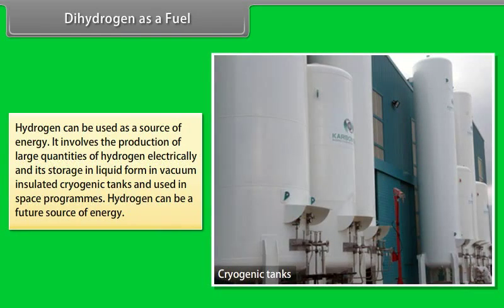Dihydrogen as a fuel: Hydrogen can be used as a source of energy. It involves the production of large quantities of hydrogen electrically and its storage in liquid form in vacuum insulated, cryogenic tanks and used in space programs. Hydrogen can be a future source of energy.